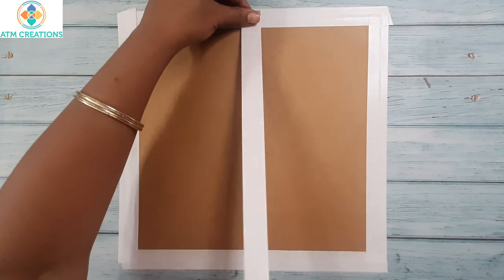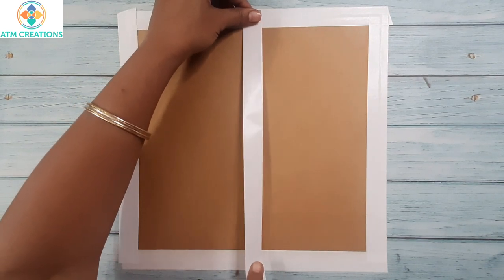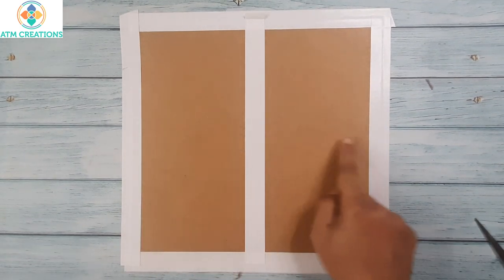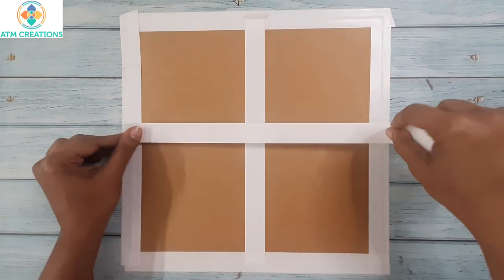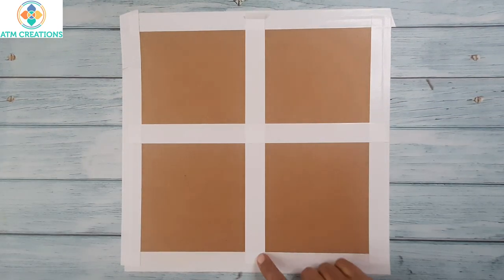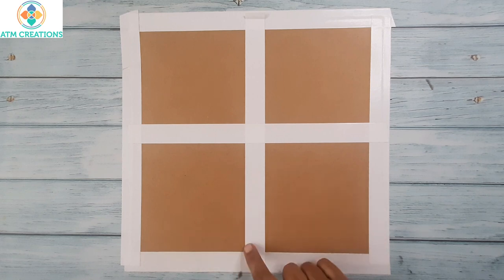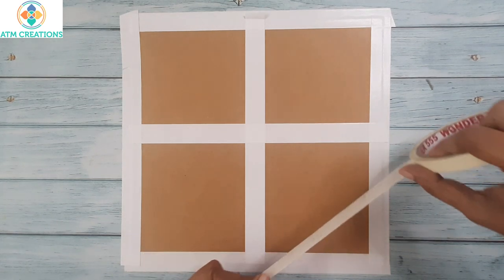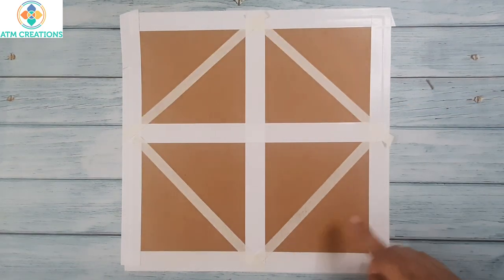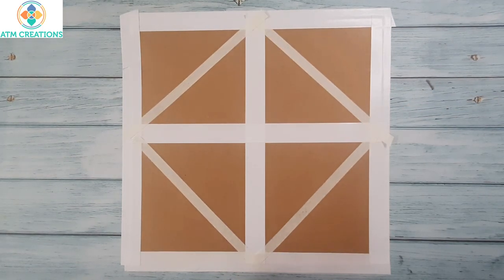The next step, I'm going to put the masking tape in the center, dividing this entire paper into half, and again divide it into half this side. Now I'll divide each of these squares diagonally into half using this masking tape. I'm going to make some more divisions using masking tape.